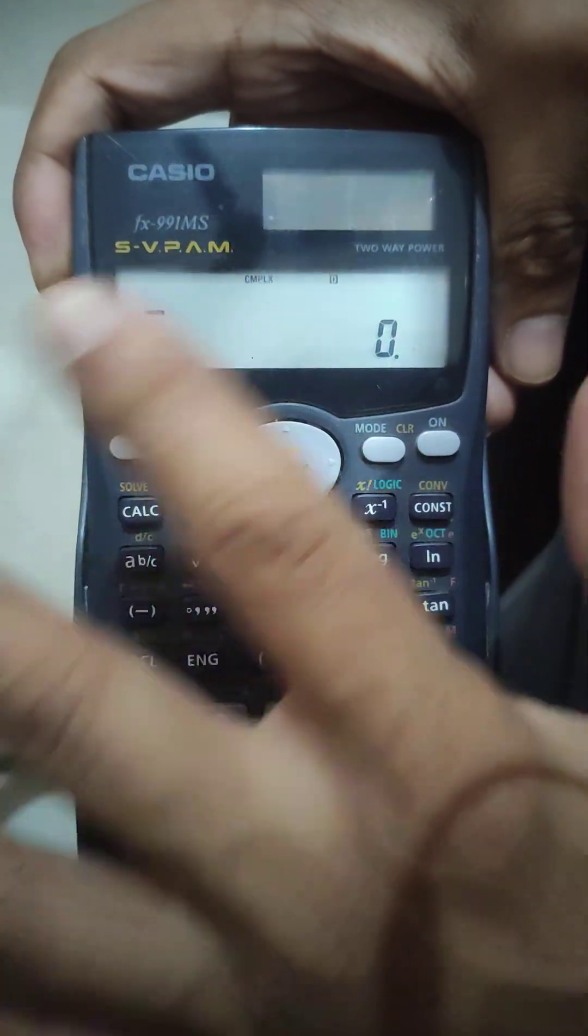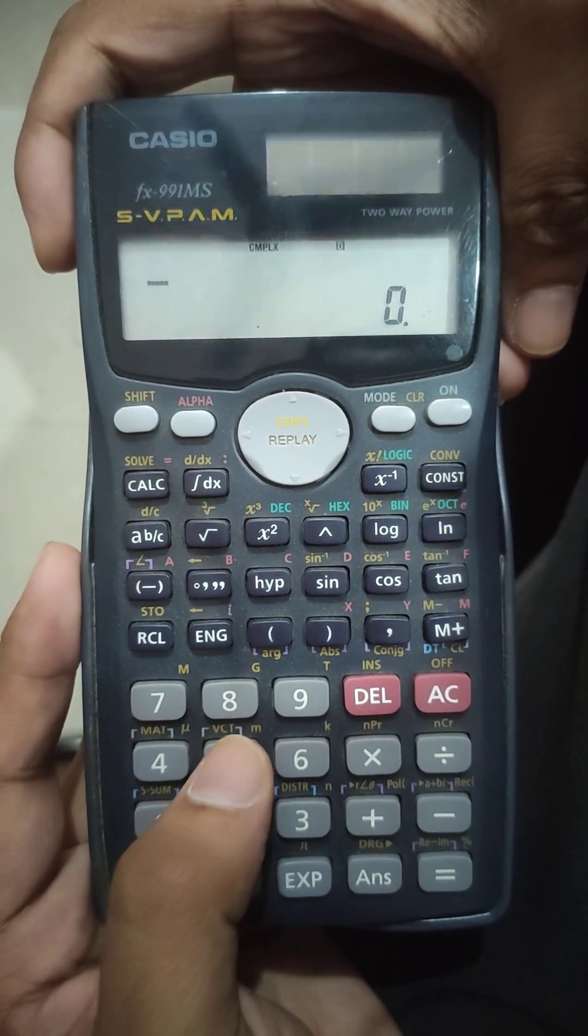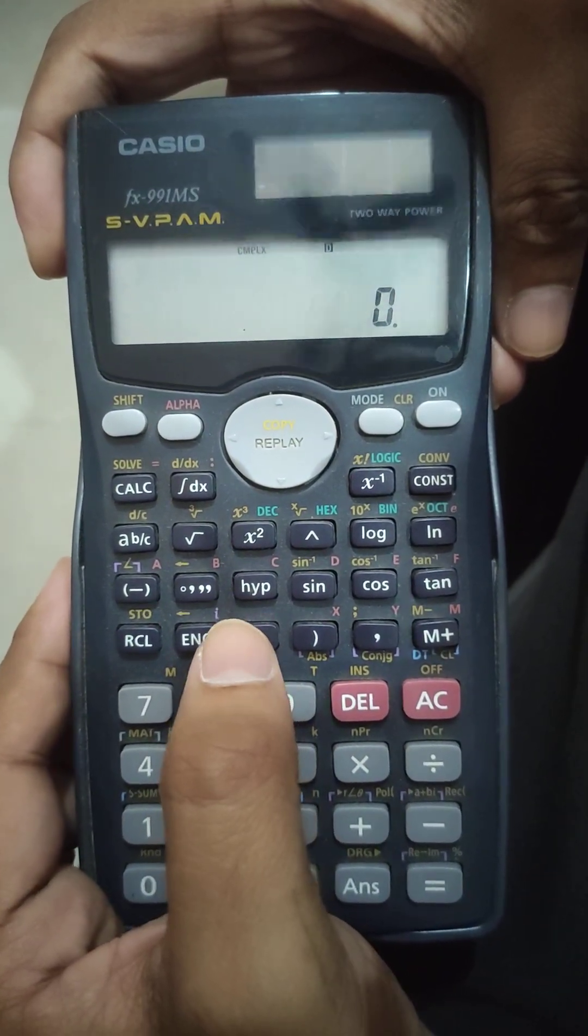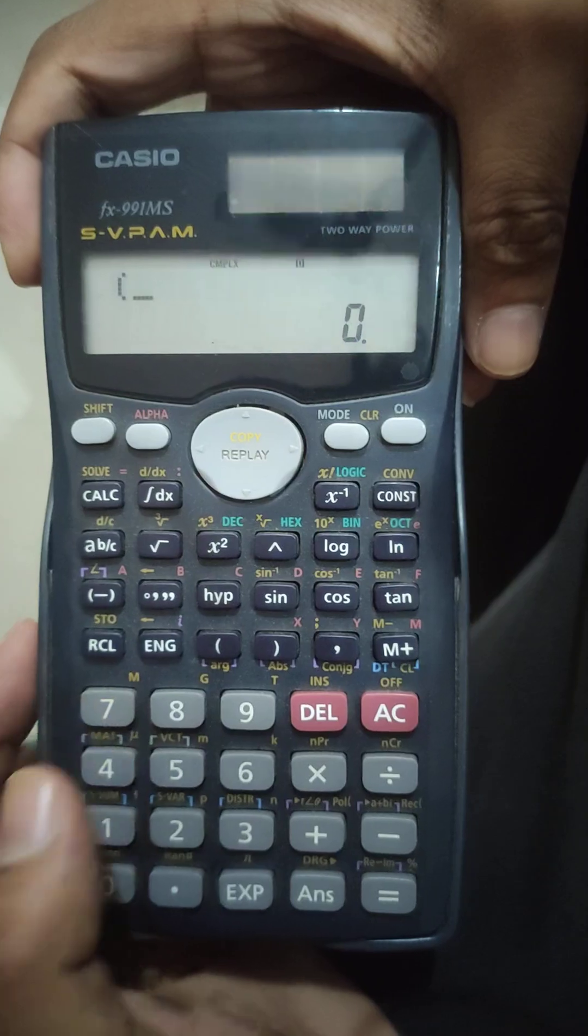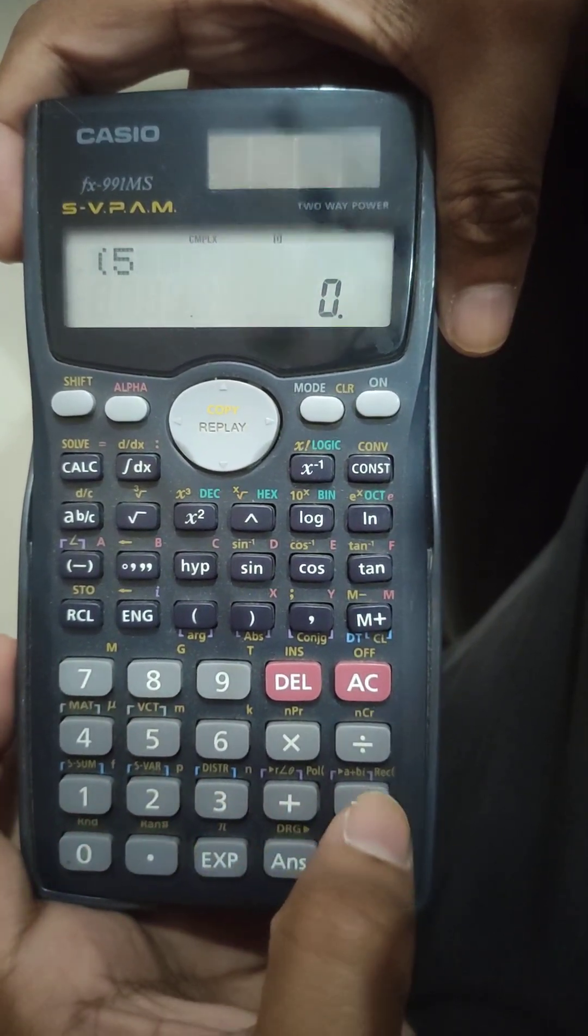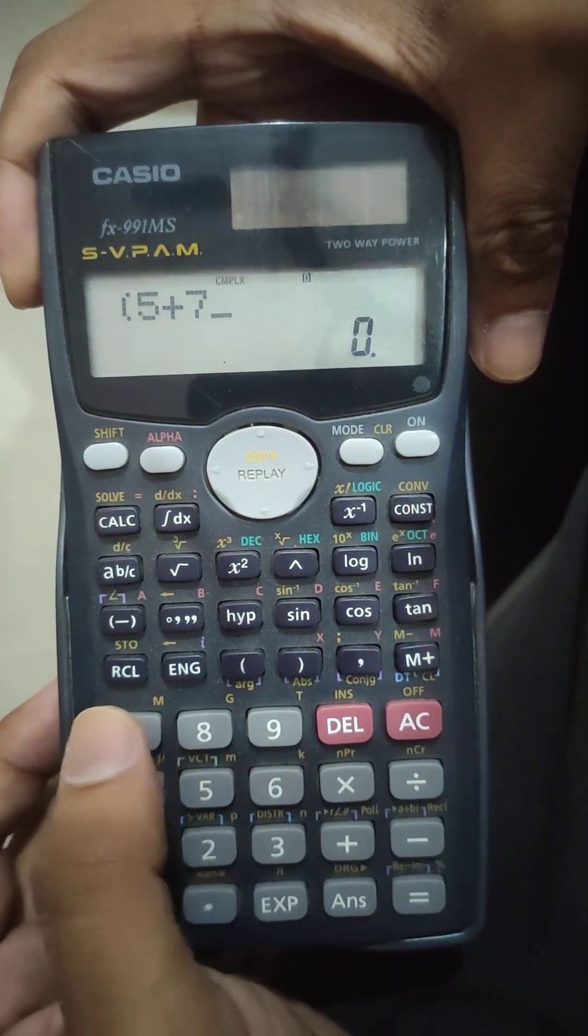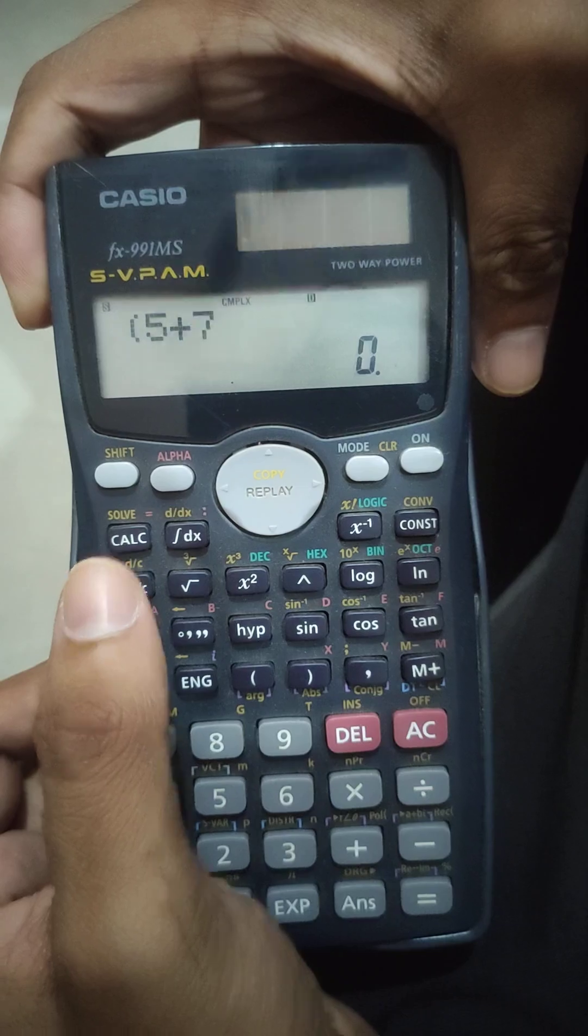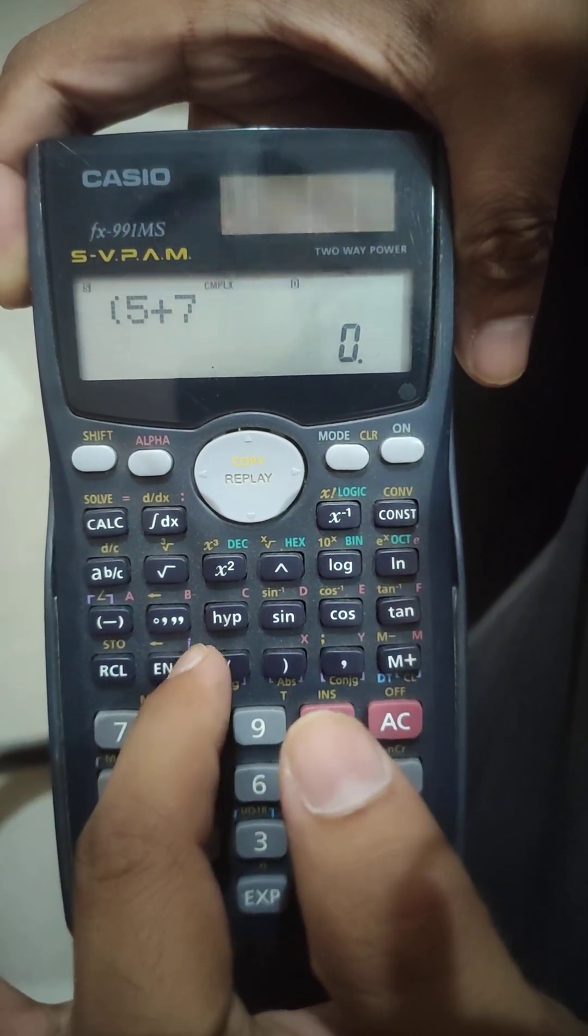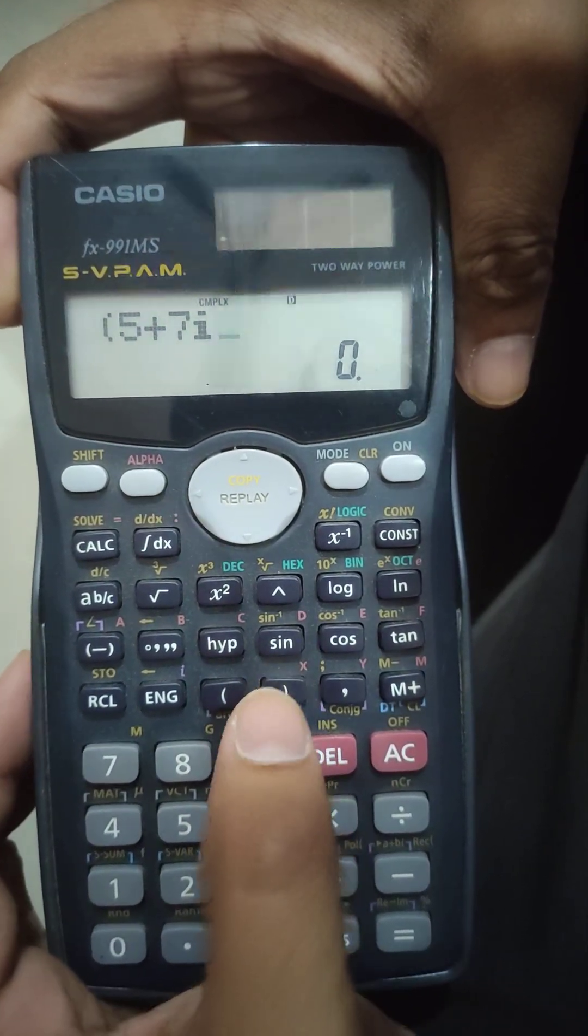First, since I have already used the complex, take any number such as 5 plus 7i. We press 5, we will be using the brackets, it will be easier. Even if we don't, there's not much problem. Press 5 plus, and then press 7, and press shift, and then we press this ENG, because i is here, imaginary. So 5 plus 7i, then close the bracket.